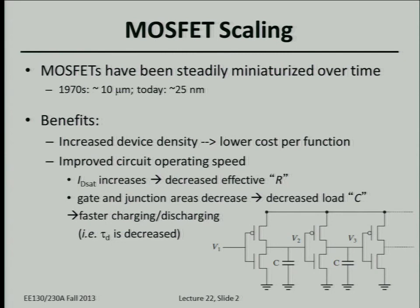Transistors have been steadily scaled down in lateral dimensions over the last five decades since Moore's observation. In the 1970s, channel lengths started at about 10 microns. Today, the shortest transistors used in any product are about 25 nanometers, manufactured by Intel in state-of-the-art microprocessors. If a transistor is smaller, you can fit more of them in a single area — say a square centimeter — so a chip can perform more functions with lower cost per function.